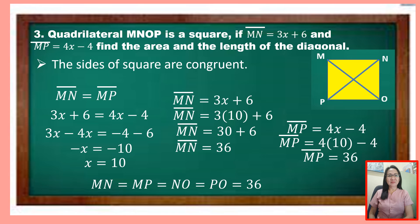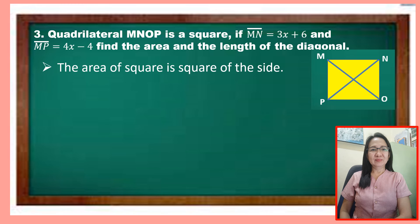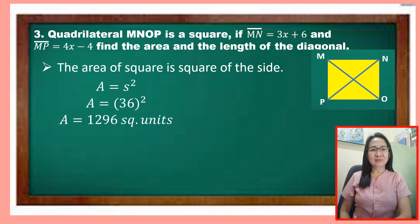Therefore, all four sides — MN, MP, NO, and PO — are all equal to 36 units. To find the area, which is the square of the side, we use A equals s squared. Substituting 36 for s, the square of 36 is 1296, so the area is 1296 square units.